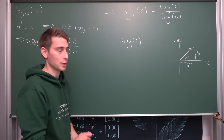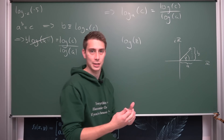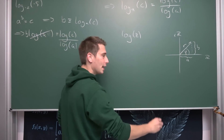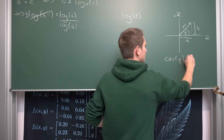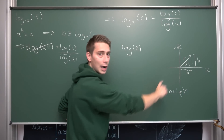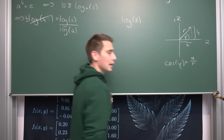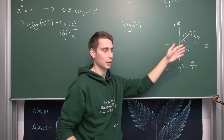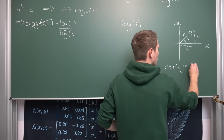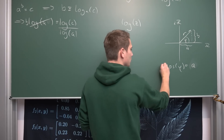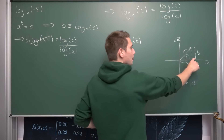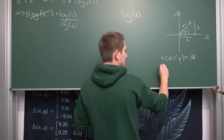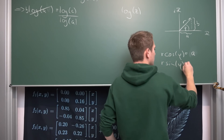Now we are going to do some trigonometry. Our vector has a certain magnitude — a certain length — which we call r. The cosine of our angle phi is adjacent over hypotenuse, so a over r. If our radius is non-zero — which we suppose it is — then we can multiply both sides by r, leaving us with the real part equaling r times cosine of phi. Similarly, sine of phi equals b over r, so r times sine of phi equals b.